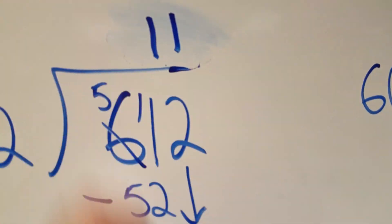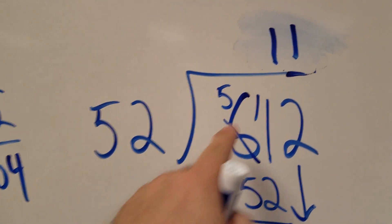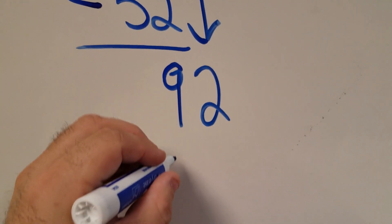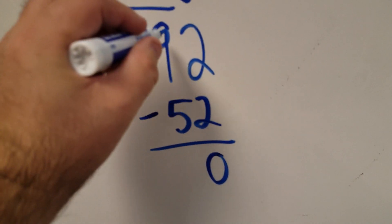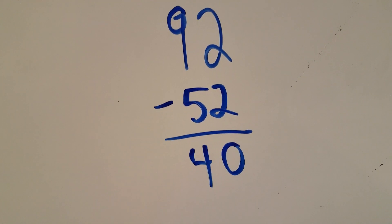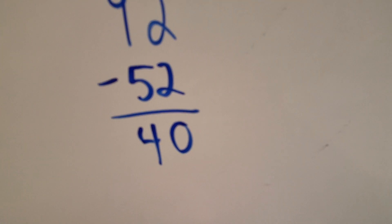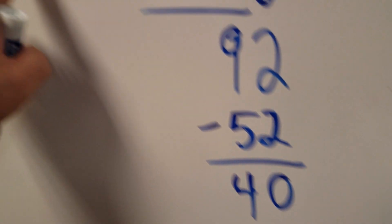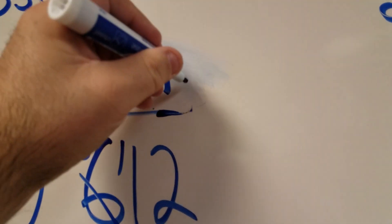So I know that my only answer is 1. I have to subtract because 52 times 1 is 52. I'm going to take 52 away from 92. 9 minus 5 is 4. I have nothing else to bring down. As long as my remainder is less than my divisor, I'm okay. So my answer is 11 remainder 40.